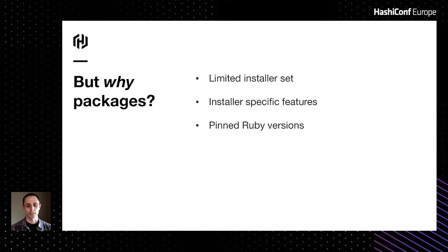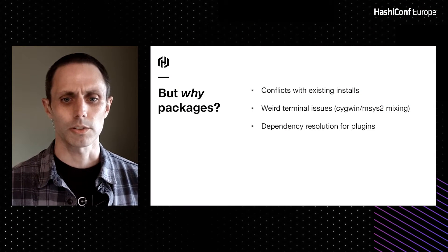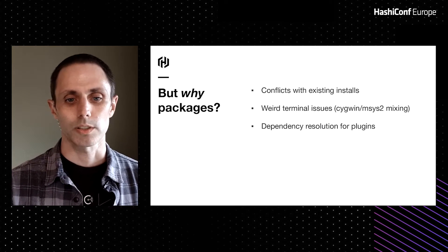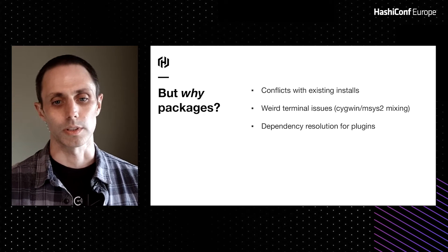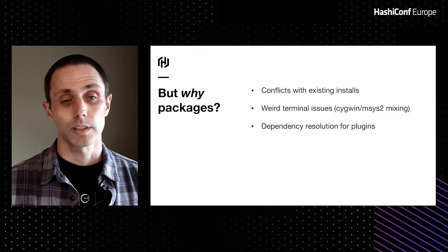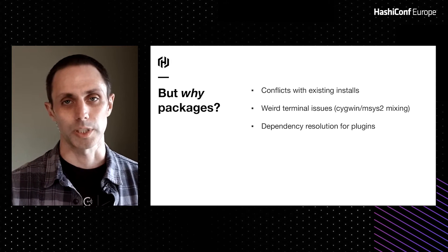While the packages are helpful in some situations, they can also cause issues. Installers are only available for a limited number of host platforms and Linux distributions. AppImage has helped address this on the Linux side, but it also introduces a significant runtime penalty. Packaging also leads to pinned Ruby versions, which can make it difficult for users trying to run Vagrant outside of the installer packages. Tools provided with our package may conflict with other existing installations, terminal users can have issues especially on Windows, and plugin installation can become difficult due to dependency resolution problems.